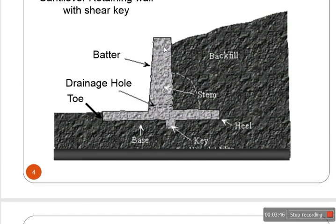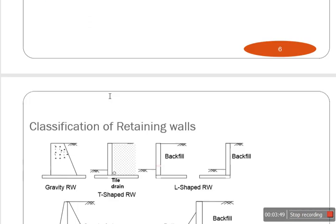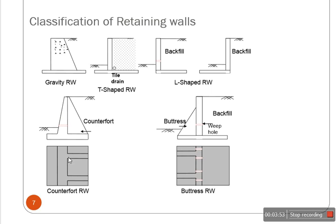A cantilever retaining wall is L-shaped. A counterforce retaining wall has a counterforce provided towards the backfill. A buttress retaining wall has a small wall-type construction along the length of the retaining wall on the opposite side from the backfill. If that same small wall is constructed towards the backfill side, it is called a counterfoot wall. These differences are very important when distinguishing between types of retaining walls.